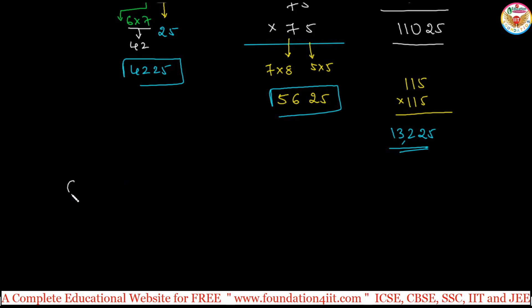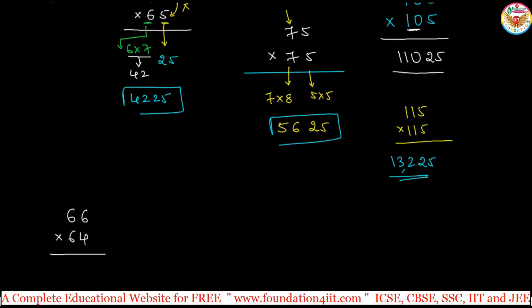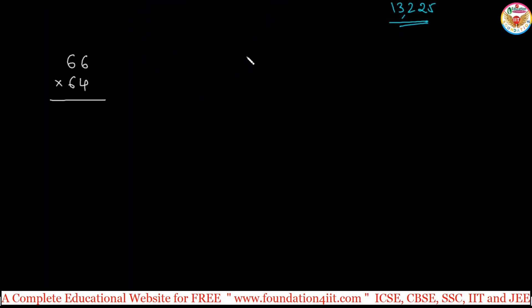Now, for example, 66 multiply with 64. You can use the same method. Actually, the sum of the units place, 6 plus 4 is 10, and the tens place are same. So last two digits add to 10 and tens place are equal. Same here, 5 plus 5 is 10, tens digits are same: 7, 7, 6, 6, 10, 10.